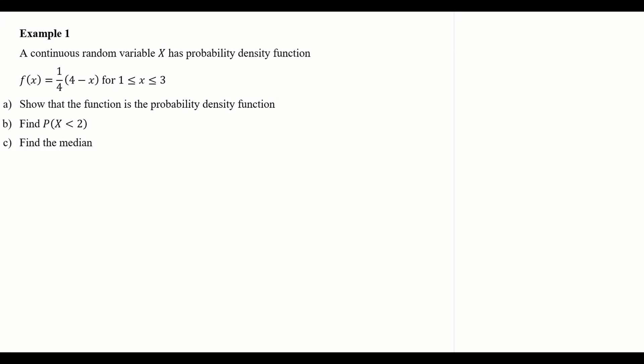Example one: a continuous random variable X has probability density function f(x) = (1/4)(4 - x), valid for x between 1 and 3. Part a asks us to show that the function is a probability density function (PDF). Part b asks us to find the probability of X less than 2, and part c asks us to find the median.